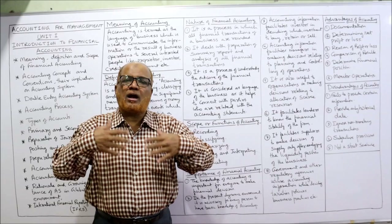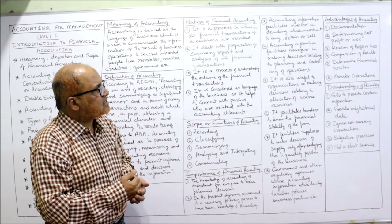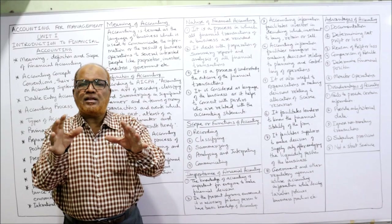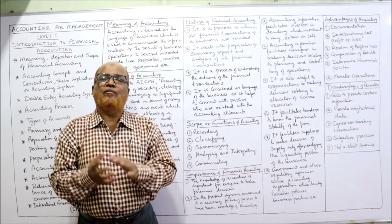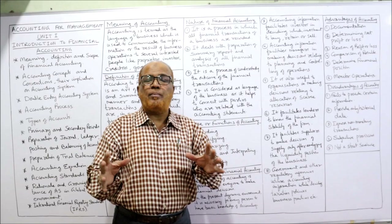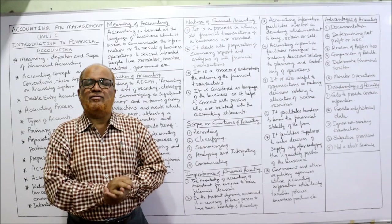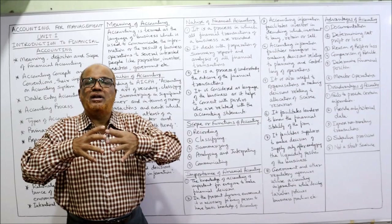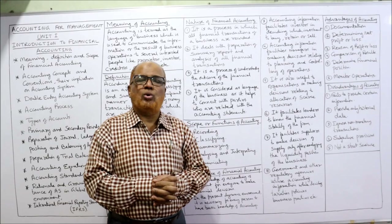Fifth, accounting helps determine financial position — what is the net worth of the business, how much are the assets and liabilities. Sixth, it monitors operations — one of the important functions of management is controlling activities after planning. All operations can be controlled with the help of accounting; without accounting it would be difficult to monitor operations.